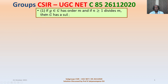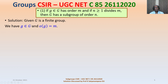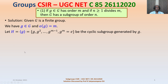We examine Option 1: if an element g in G has order M and N ≥ 1 divides M, then G has a subgroup of order N. Let H be the cyclic subgroup generated by g, with elements g, g², ..., g^(M−1), and g^M equals the identity. This is the cyclic subgroup generated by g.